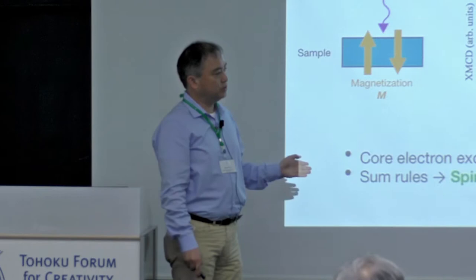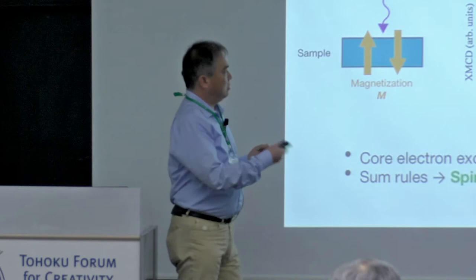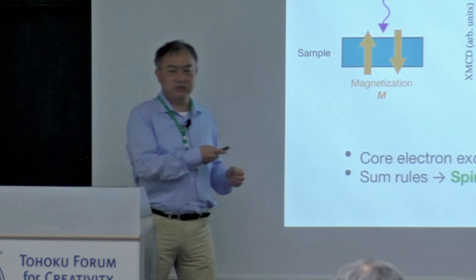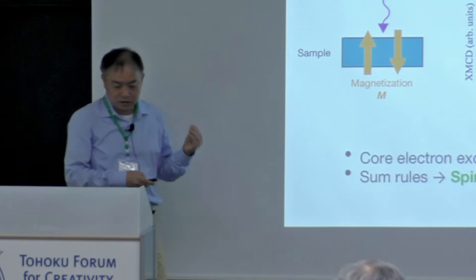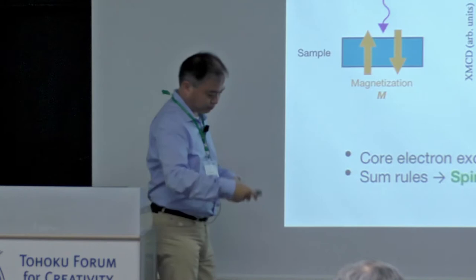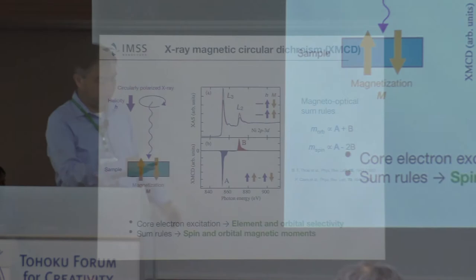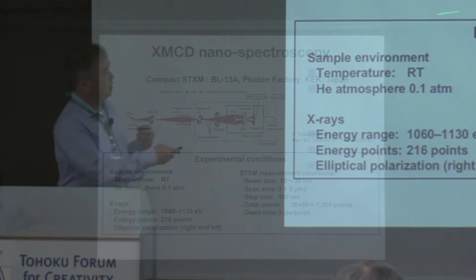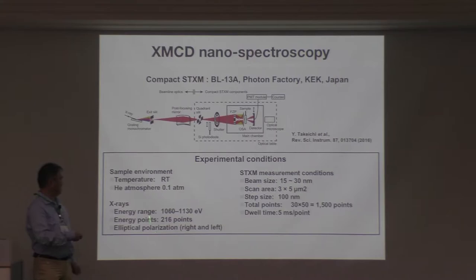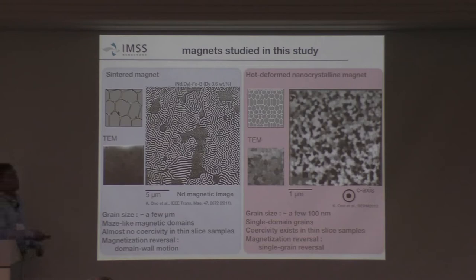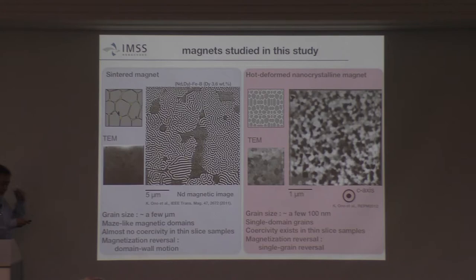The contrast obtained from the X-ray microscope is directly related to spin and orbital magnetic moments, making magnetic domain pattern analysis straightforward. A key constraint of this transmission method is that sample thickness is very limited — typically 50 to 100 nanometers — compatible with TEM imaging, so we can observe the same area with both TEM and X-ray microscopy. We can see that when changing sample size, magnetic domain patterns differ significantly. For a dysprosium-added sintered magnet with grain sizes of a few to five micrometers, we observe many maze-like domain patterns.